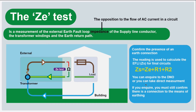This is an important test because it confirms the presence of an earth connection. It's also used further down the line in your ZS tests — when you're testing the installation internally, we need the ZE reading to get the ZS. You could inquire to the DNO about the ZE reading, but they'll just give you the maximum reading, or say they don't know. And even if you do inquire, you've still got to verify that you have an earth return path, so it's a test that needs to be done.